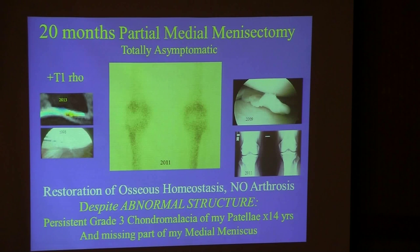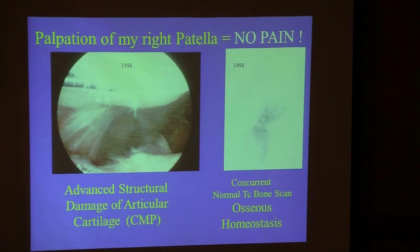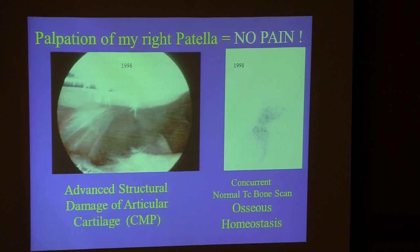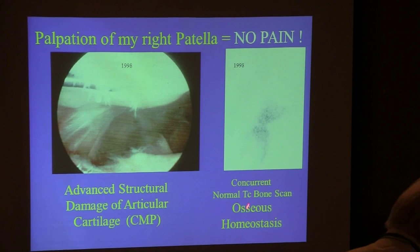I am totally asymptomatic despite the fact I am not structurally normal. I am metabolically normal, having achieved this in the face of structural abnormality. I also had both knees arthroscoped without anesthesia to create a neurosensory map. I found I had grade three chondromalacia of both patellae — yet with a probe into my right patella in 1998, without anesthesia, I felt no pain at all, concurrent with a normal bone scan proving osseous homeostasis.